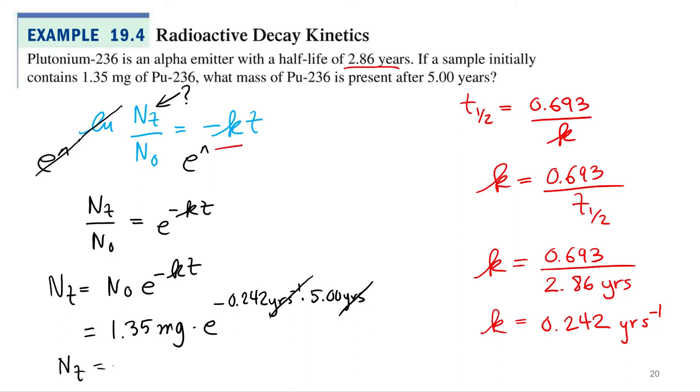So what is my n sub t? 0.403 milligrams. So whatever you start out with your initial amount, that's why we can use amounts. We don't have to worry about molarity concentration. We use grams, milligrams. We'll even use like decay units, disintegrations, eventually.